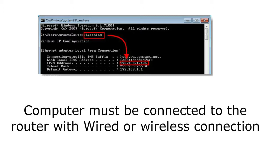The connection could be wired or wireless. In the case of a wireless connection it will show Wireless Network Connection, and in the case of a wired connection it will show Local Area Connection or Ethernet Adapter.